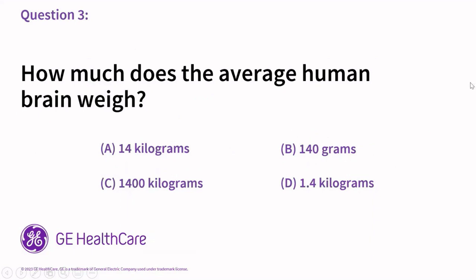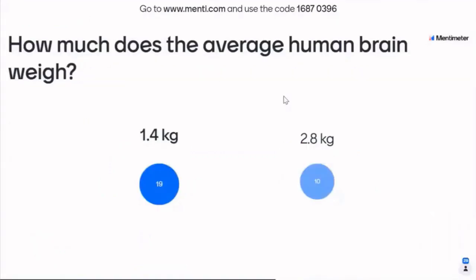How much does the average human brain weigh? Options were 14 kg, 140 grams, 1,400 kg, or 1.4 kg. 46 of you chose the correct answer: approximately 1.4 kilograms, ranging from 1.3 to 1.5. You know your stuff already — you're almost a neuroscientist.